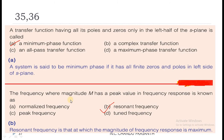Question 36: The frequency at which the magnitude M has a peak value in the frequency response is known as resonant frequency. Resonant frequency is that frequency at which the magnitude of the frequency response is maximum.